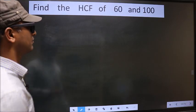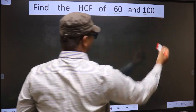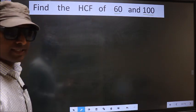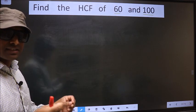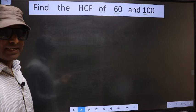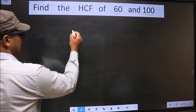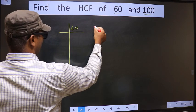Find the HCF of 60 and 100. To find the HCF, first we should do the prime factorization of each number separately. That is, 60 and 100.